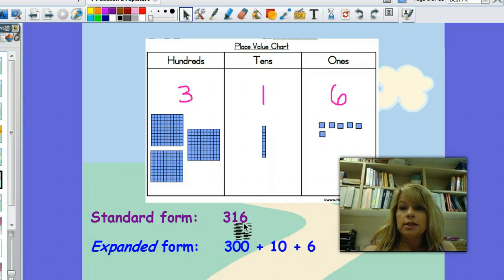If we break apart 316 into its place value using base ten blocks or other tools, we get 300 for the hundreds, 10 for the tens, and 6 for the ones, to show the value of that number and its parts.